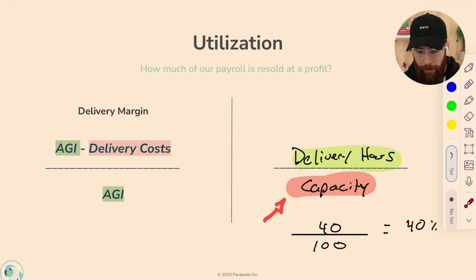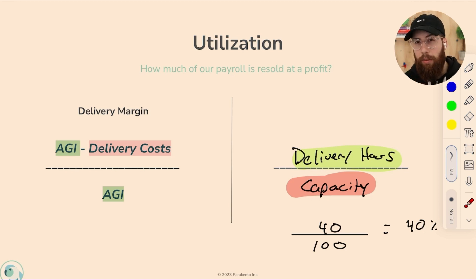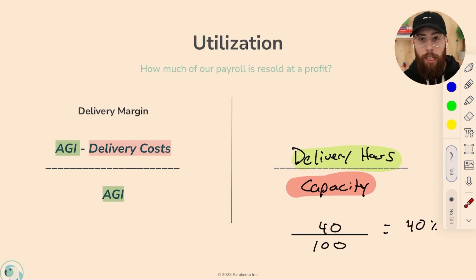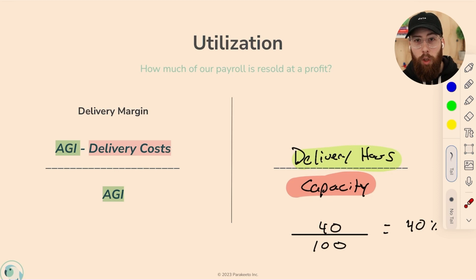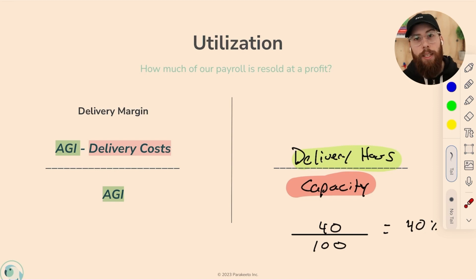Now the same thing is true about capacity. I want to give a warning to any project managers listening — you're probably going to have an aneurysm when I first explain how we measure capacity, but bear with me. When we talk about capacity, we're talking about all of the time we purchase from a given team for the area of the business we're measuring. If we looked at utilization for the whole agency for a year, we would include everybody in that calculation — including admin staff, sales staff, the founder — people that don't do any client work. We're including all of their capacity.